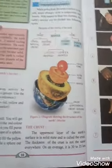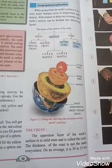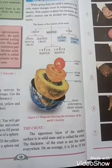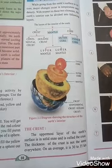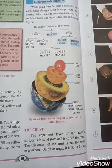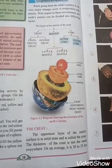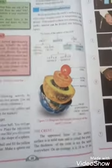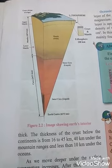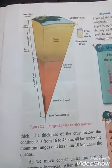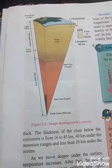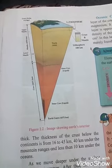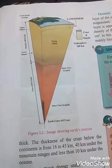Crust: the uppermost layer of the earth's surface is in a solid state and is called the crust. The thickness of the crust is not the same everywhere. On average it is 30 to 35 kilometers. The thickness of the crust below the continent is 16 to 45 kilometers, about 40 kilometers under mountain ranges, and less than 10 kilometers under the ocean. The image shows: crust 30 km average, lithosphere, upper mantle at 2,070 km, lower mantle, core at 3,471 km, and the earth's center at 6,371 km.